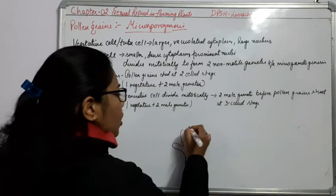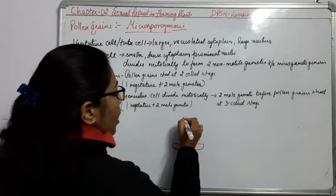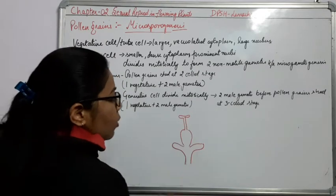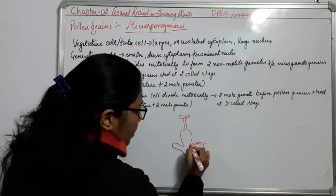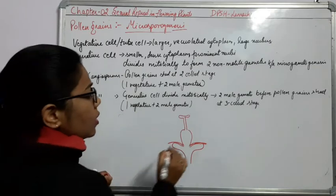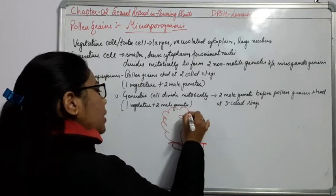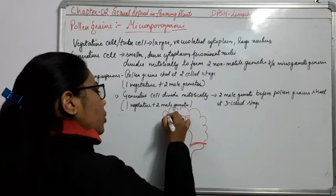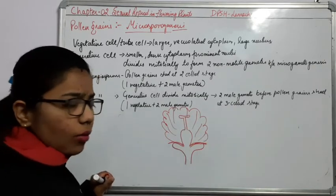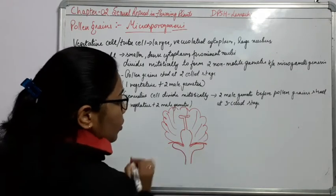This is the ovary. We know that the pistil has three different parts: stigma, style, and ovary. From here we know that some sepals are also present, which are green in color. Along with the sepals we are having the petals also. The petals are known as the corolla and these sepals are known as the calyx.